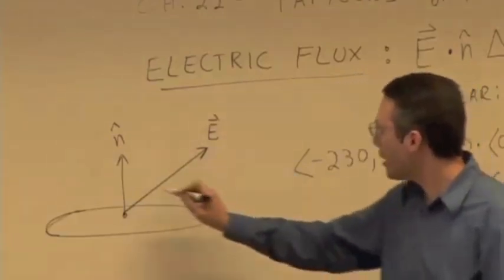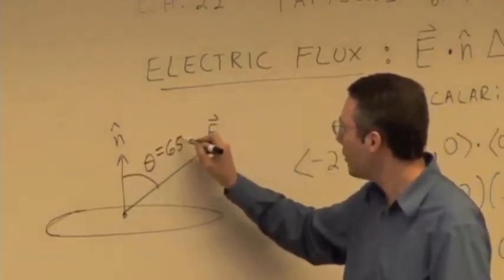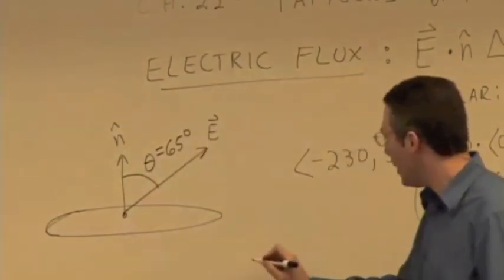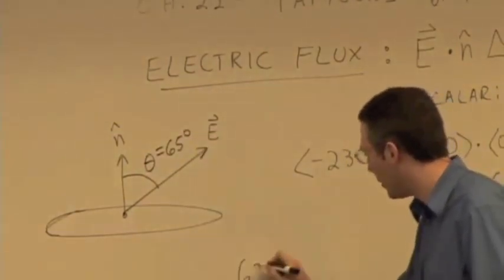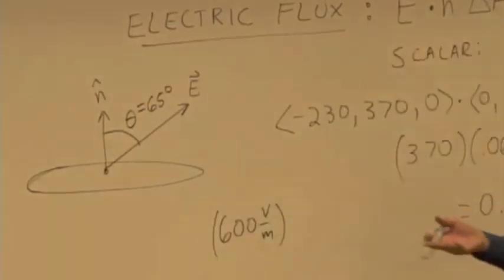And when you're talking about the dot product, you're talking about the angle between the two vectors, which is 65 degrees. So it's going to be the magnitude of E, 600 volts per meter, times the magnitude of n-hat, which is just 1.